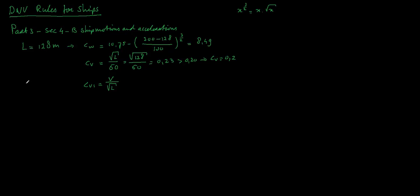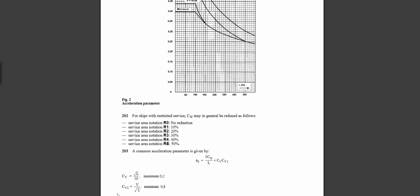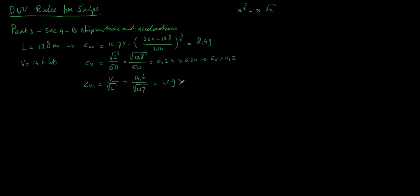Say we have a speed V of 14.6 knots. We get 14.6 divided by square root of 128 equals 1.29. Check on the graph - it says here a minimum of 0.8, so it's bigger than 0.8. Check. So we have a Cv1 of 1.29.